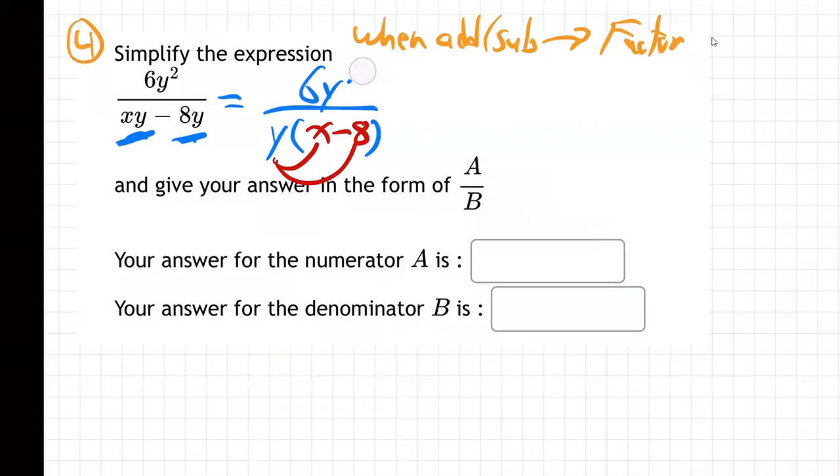So that's what I'll do. On the top, this y squared - that means two of them, right? So I'm going to cancel one of these y's with one of those y's, and it leaves one left over on the top. So we're left with 6y on the top and x minus 8 on the bottom.